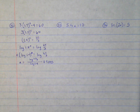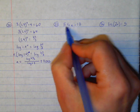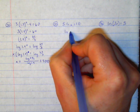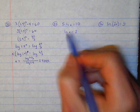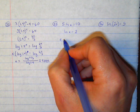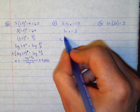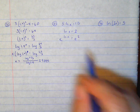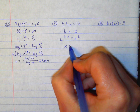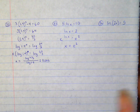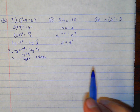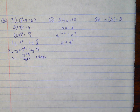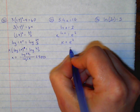Now we're switching to log and natural log equations. First thing: I'm going to get this by itself, so I'm going to divide by 5 — 10 divided by 5 is 2. The opposite of the natural log is e. So I'm going to take e to both sides. E to the natural log of x and e to the 2 — those cancel out, so I just have x is equal to e squared, which is about 7.389.